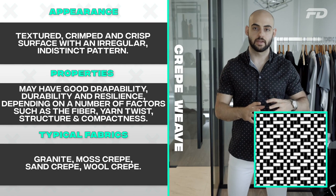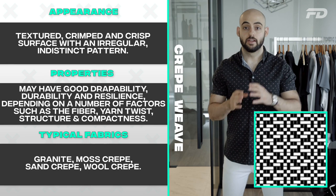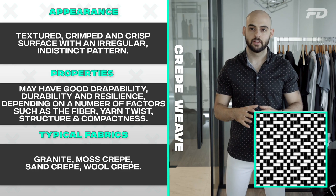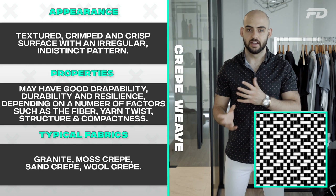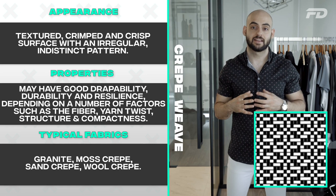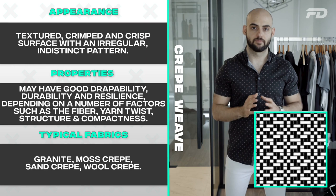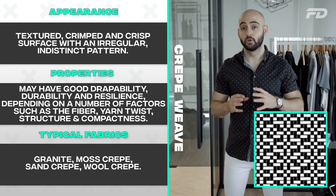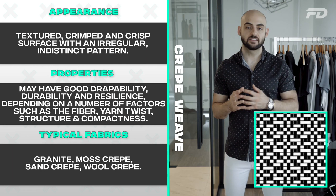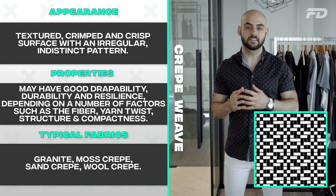Last but not least is crepe fabric — a weave you've probably seen but might not have recognized. Crepe is characterized by a combination of a plain weave and either satin or sateen-like weave structures. Visually, it has a textured, crimpled, and crisp surface with an irregular and indistinct pattern — almost erratic in its execution. Crepe has an extreme amount of variety in its surface conditions and can create interesting textures. In terms of physical properties, it can offer good strength, durability, and resilience depending on the fibers, yarns, twist, structure, and overall compactness of the fabric.